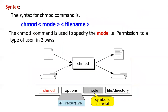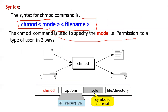The syntax for chmod is: chmod followed by the mode, then the file name. There are two different methods to specify the mode — symbolic mode and absolute mode — which will be covered in the next slides. You can observe the working of the chmod syntax.